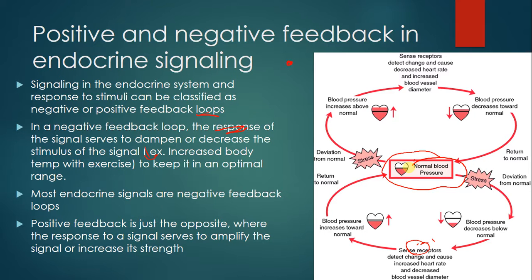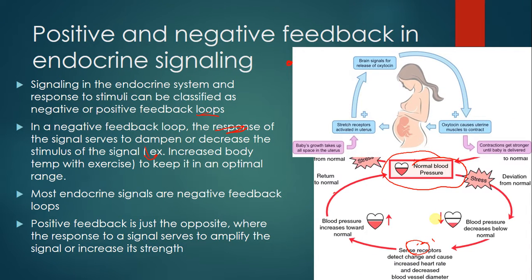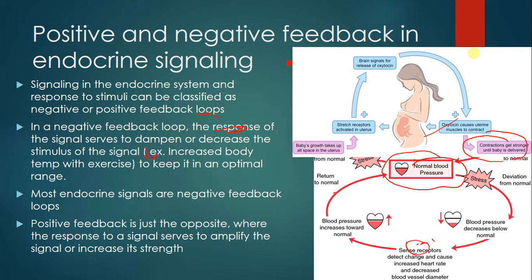Positive feedback mechanisms are the opposite: the response amplifies or increases the signal's strength. A real-life example is childbirth. When a baby fills the uterus, it activates stretch receptors, signaling the brain to release oxytocin. Oxytocin causes uterine muscles to contract, which further activates the stretch receptors—a runaway cascade that keeps amplifying until the baby is born. Positive feedback is rare in biological systems because it doesn't help maintain homeostasis.